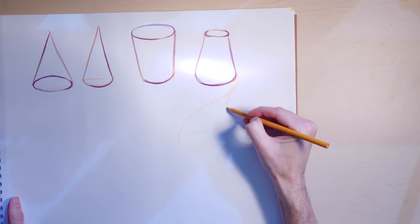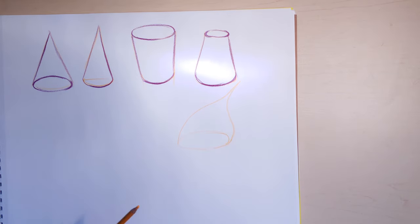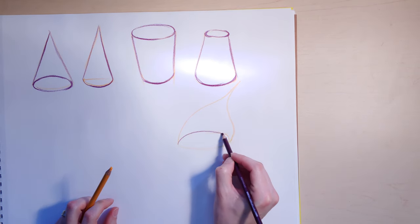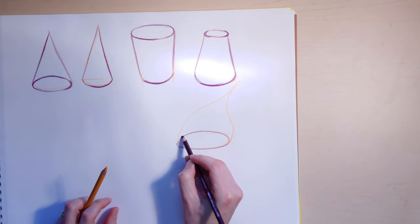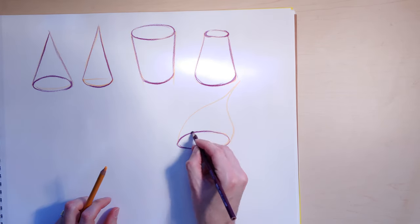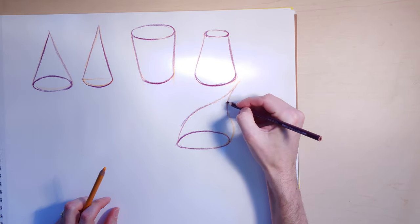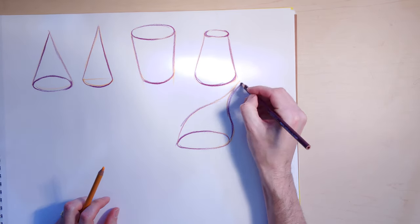When you start getting into organic cones and stuff like that, that's when it gets really fun. So this cone is kind of like, I thought it looked like a gnome's hat or something like a garden gnome because of the way that it arcs and points and looks a little bit silly.